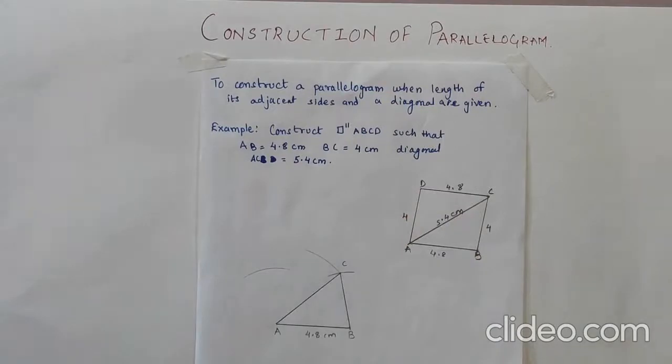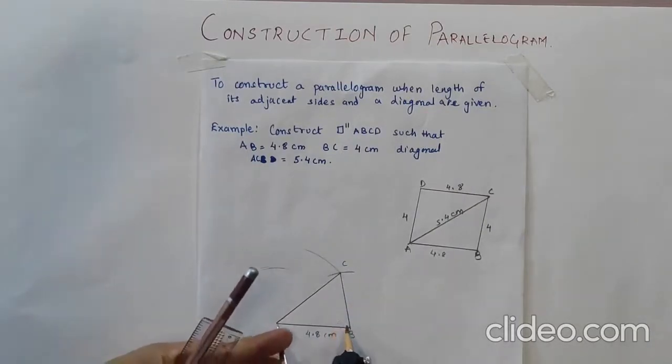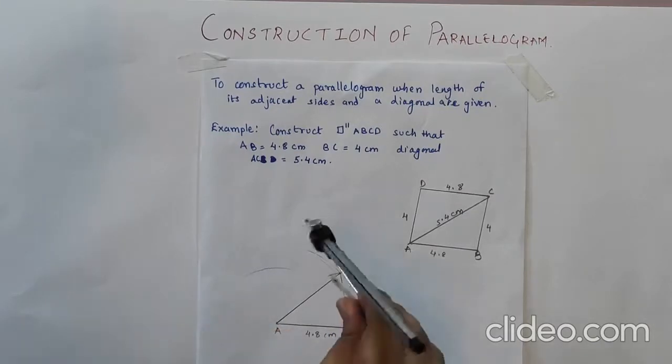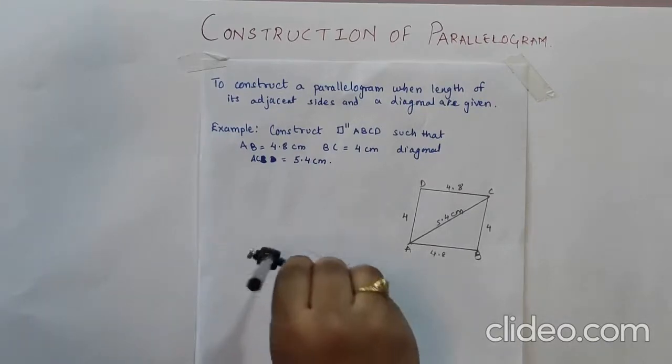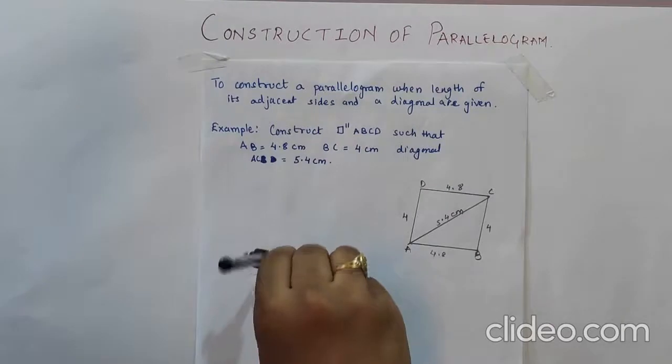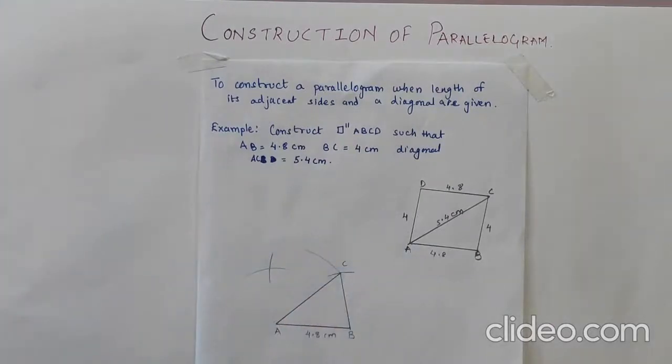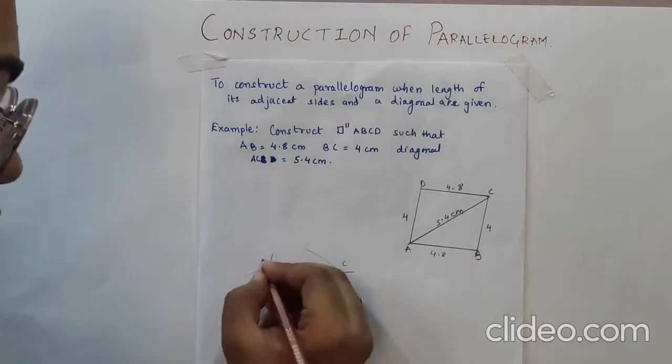Now 4.8. So from where we will measure 4.8? From which point? C will be my center. So we have already drawn 4.8. Let us measure this. Keep the center as C and cut the arc of 4.8 cm. And this point will be nothing but point D.